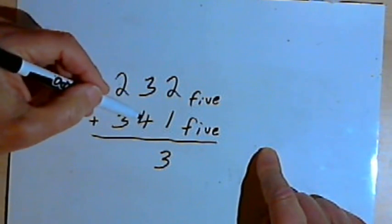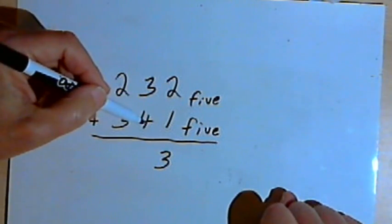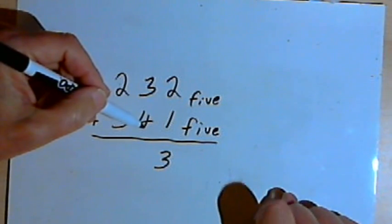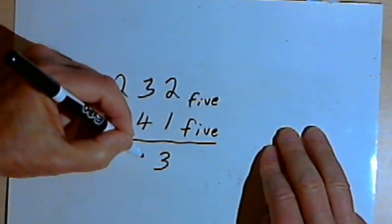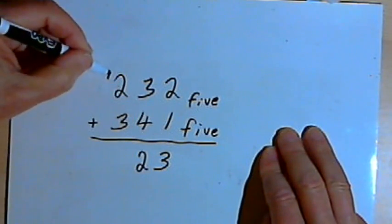I've got to add 3 and 4. So I'm going to start at the 4 and count up 3 more: 4, 10, 11, 12. So I'll write the 2, carry the 1 to the next column.